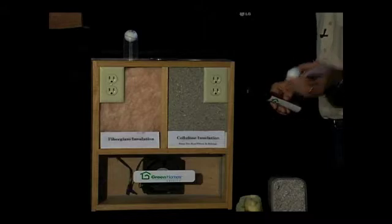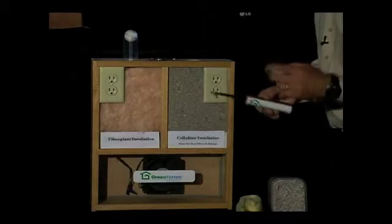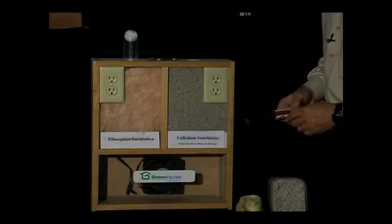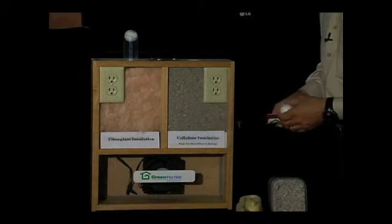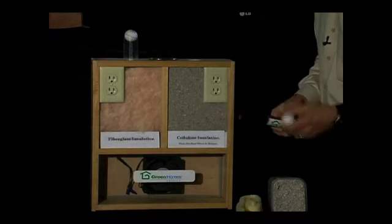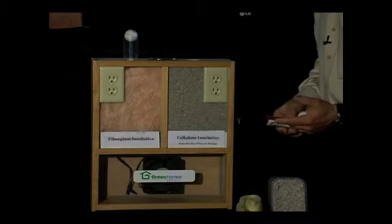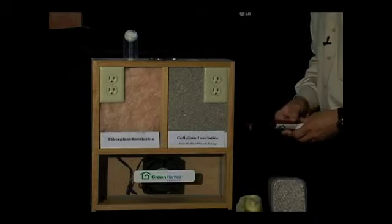So, convection is a real enemy when it comes to weatherization in your home. What you want is no air movement in that wall. With that air movement, it's also pulling potentially moisture up through that cavity also. So, we want to stop that. It'll reduce your heating and cooling bills. Not only that, but it's going to make it a whole lot more comfortable in your house.